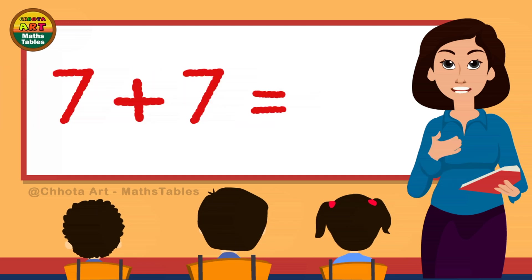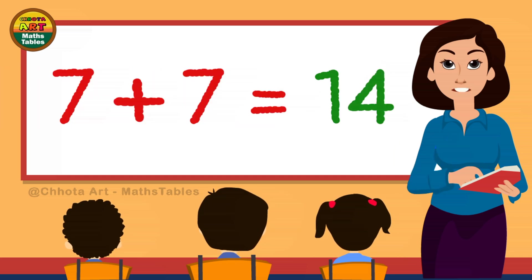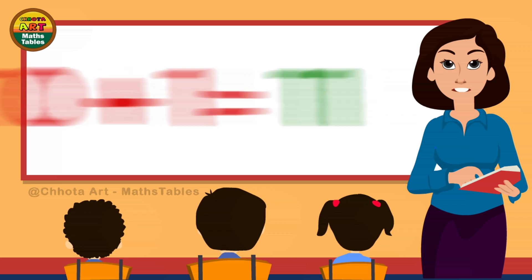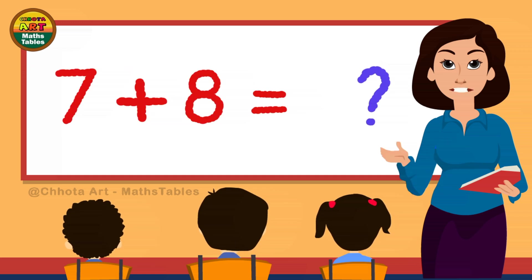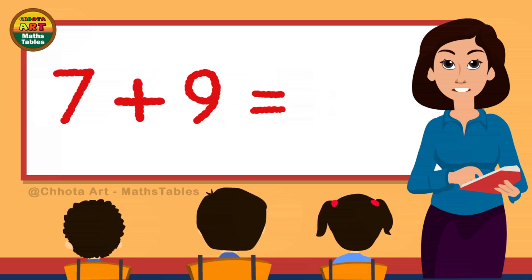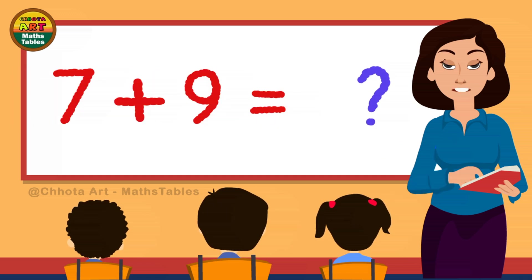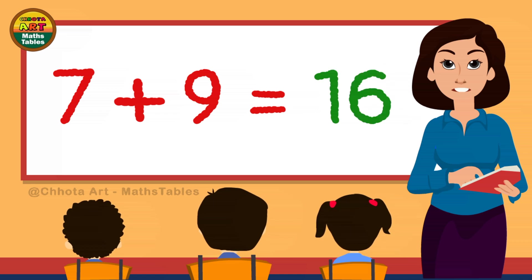7 plus 7 is... 7 plus 7 is 14. 7 plus 8 is... 7 plus 8 is 15. 7 plus 9 is... 7 plus 9 is 16.